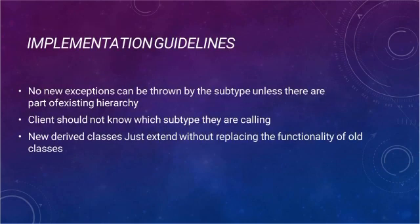Here are the implementation guidelines and how it works in the process of development. We should ensure that no new exceptions can be thrown by the subtype unless they are part of the existing hierarchy. We should also ensure that the client should not know which subtype they are calling. The new derived class is just extended without replacing the functionality of the old class.